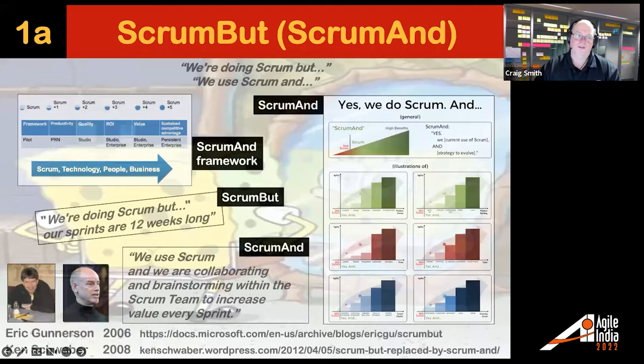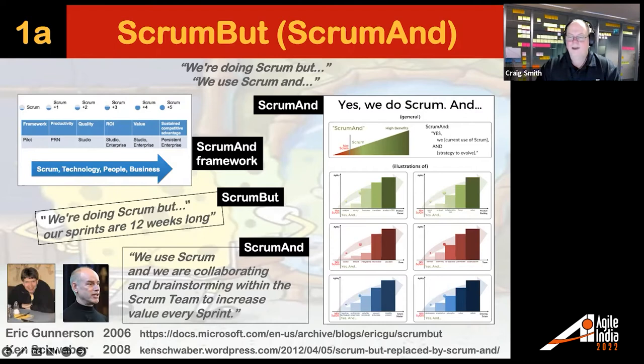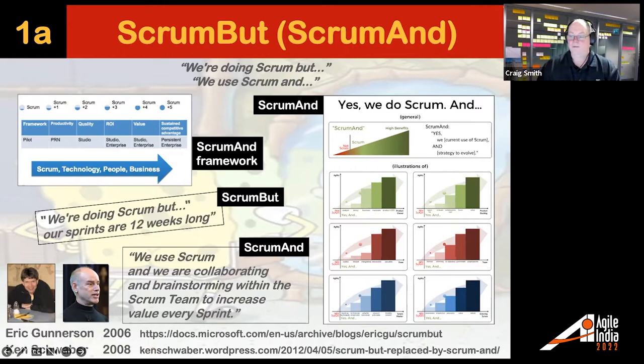The problem with Scrum is it sometimes turns into what we call 'Scrum but' — when you hear yourself saying things like 'we're doing Scrum, but our sprints are 12 weeks long' or 'we don't have a full-time product owner.' If you're following Scrum, it's the rules of the game. Ken Schwaber said we should turn that around: not 'Scrum but,' but 'Scrum and.' That's when you start to run out of runway and need more methods in your toolbox.